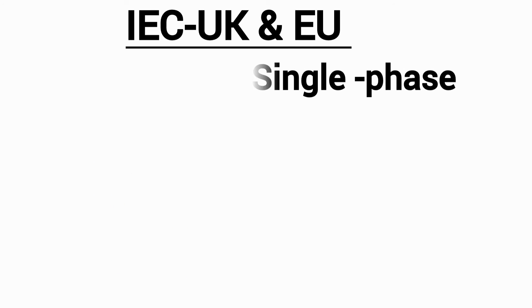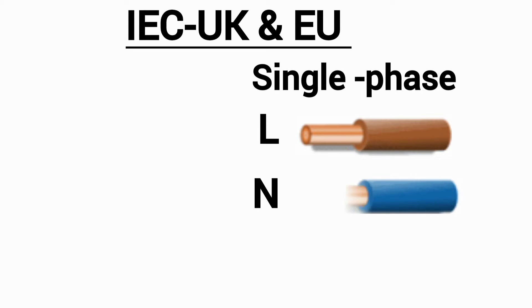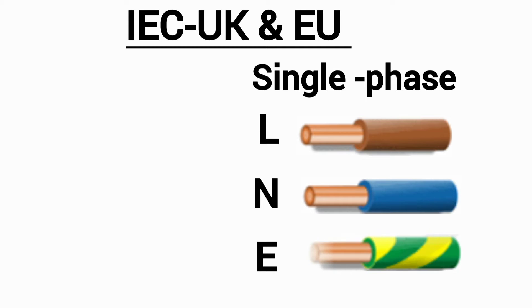And for single-phase wiring, the live wire is brown, the neutral wire is blue, and the earth wire is yellow with green stripes.